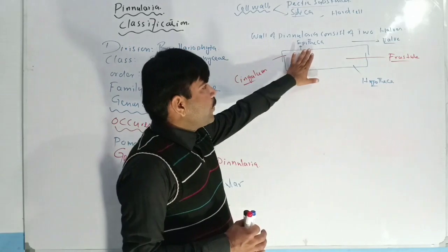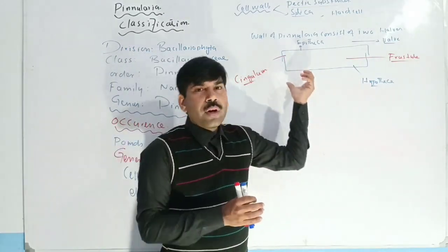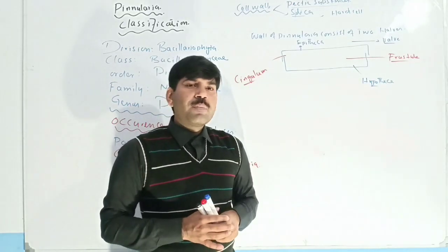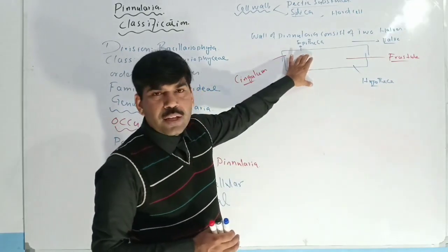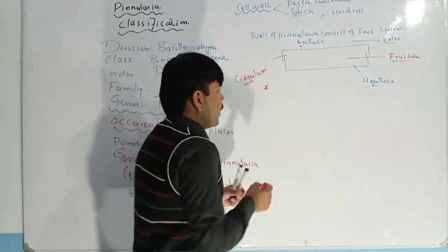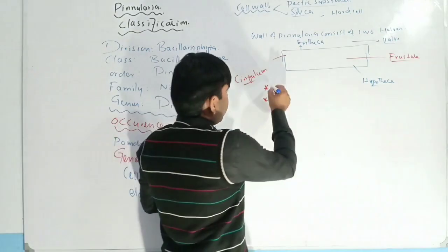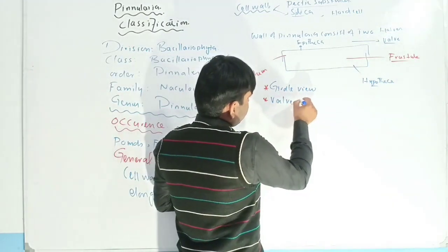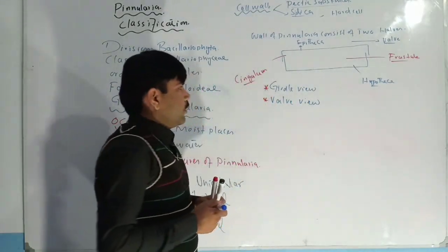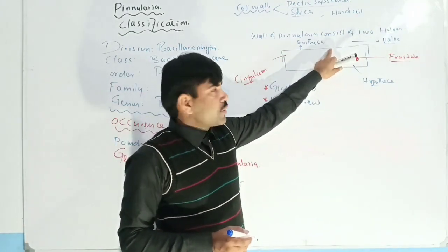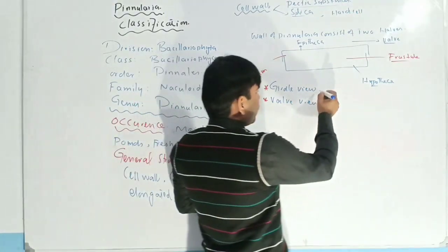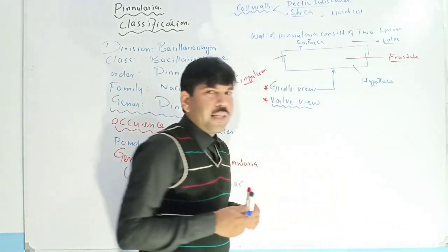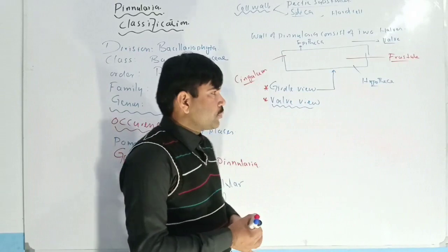Now we are going to study about the views of the cell. We can view the Pinnularia cell in two types of views: one is known as valve view, and the other type of view is known as girdle view. The diagram currently on the whiteboard is the girdle view. Now I am making a diagram of the valve view.